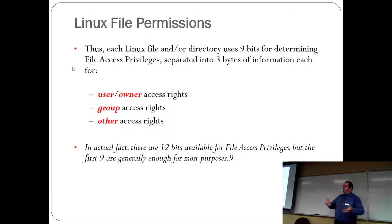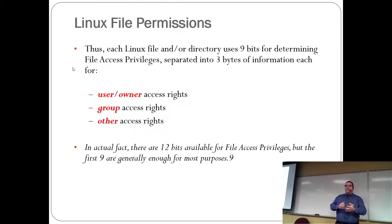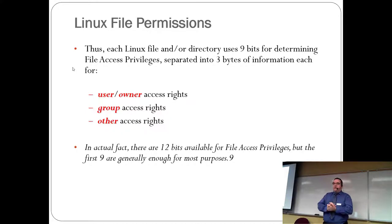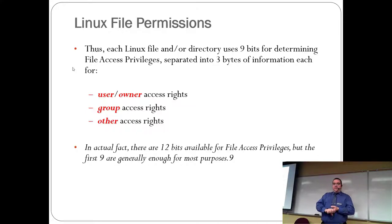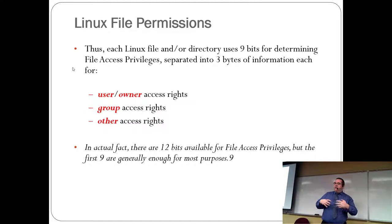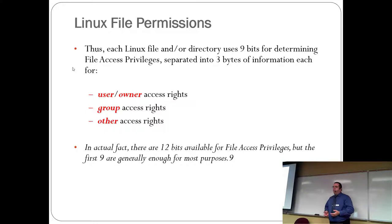After the first bit identifying the file type, there are three octets — three bytes of information, each for permissions for the user, the group, and 'other' (also called 'world'). The user owner has certain permissions, the group has certain permissions, and the first nine bits are usually what's used. There are actually 12 bits total — the other bits do special things.